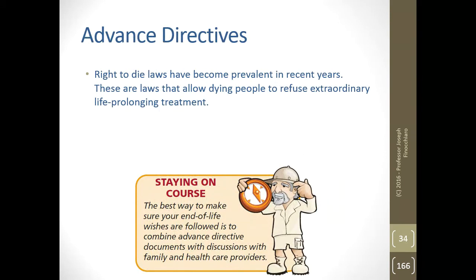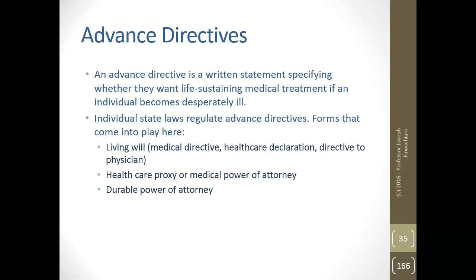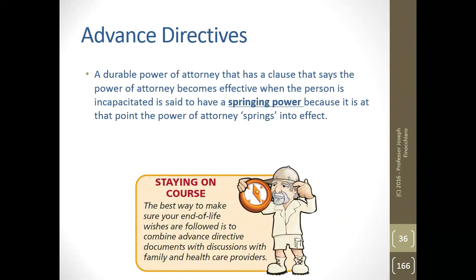What about advanced directives? Right-to-die laws have become prevalent in recent years. Several nations have authorized euthanasia laws so that people can take their own life under medical supervision, and a couple of states within the United States have done so as well. An advanced directive allows dying people to refuse extraordinary life-prolonging treatment — it is a written statement specifying whether they want life-sustaining medical treatment if an individual becomes desperately ill. Forms include living wills, declarations, health care proxies, medical power of attorney, and durable powers of attorney. A durable power of attorney with a clause that becomes effective when the person is incapacitated is said to have a 'springing power' — it springs into effect at that point.